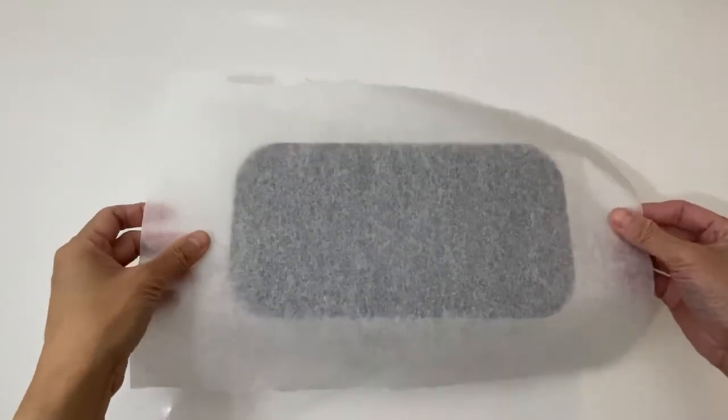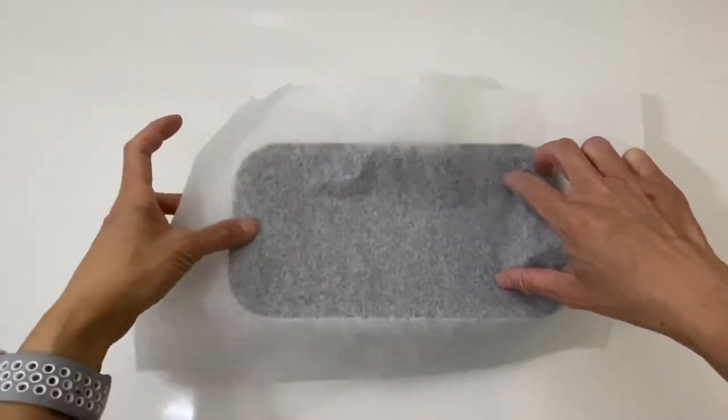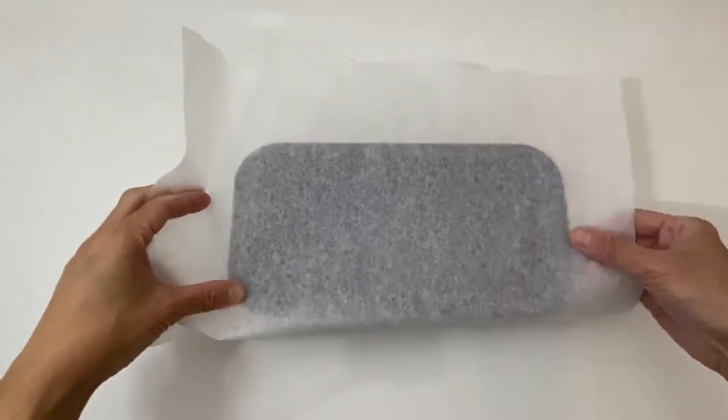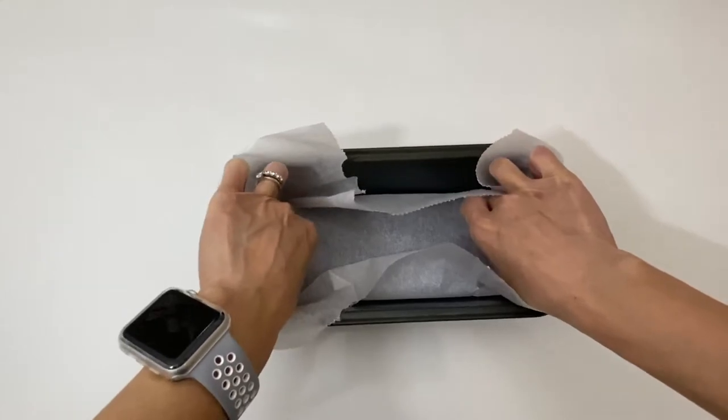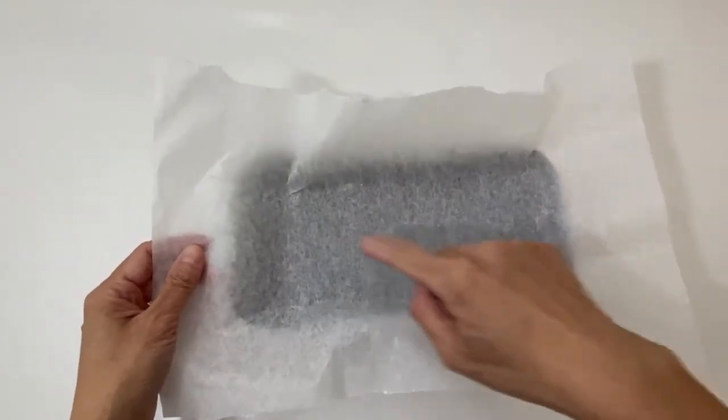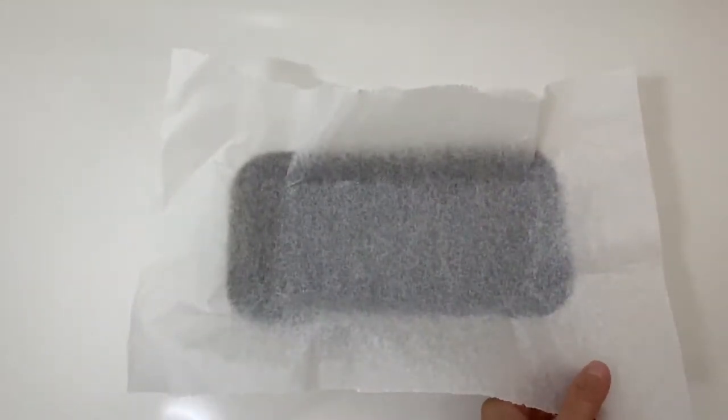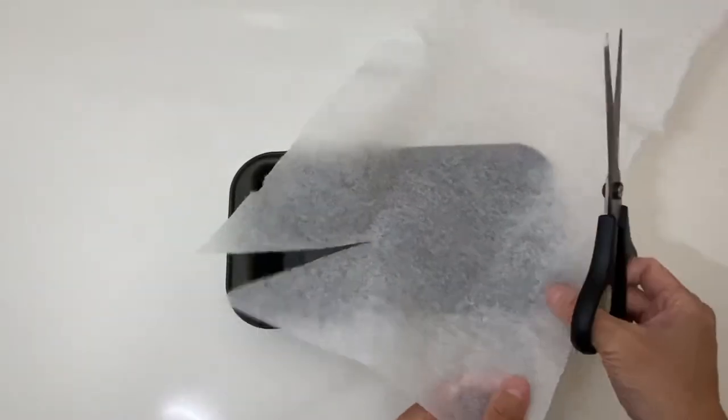This way is very similar to the square tin one. Get a rectangle shape of parchment paper, place it on top of the tin. Then press it down along the edges until you reach the bottom. Take it out, then you will see the four indentations. Then use a pair of scissors to cut it diagonally, just like this.